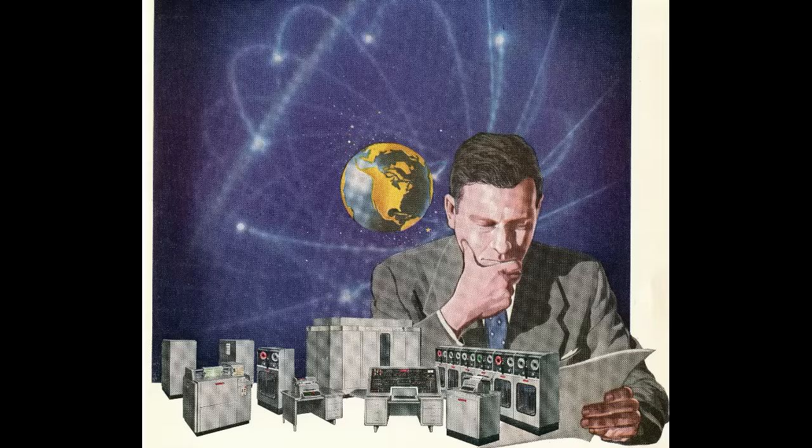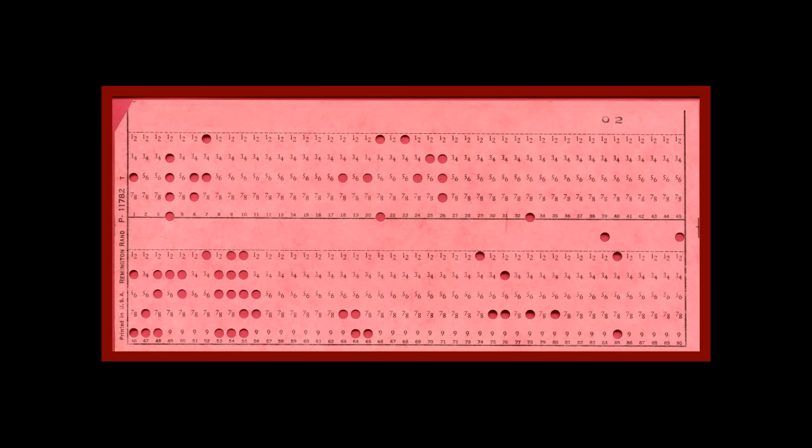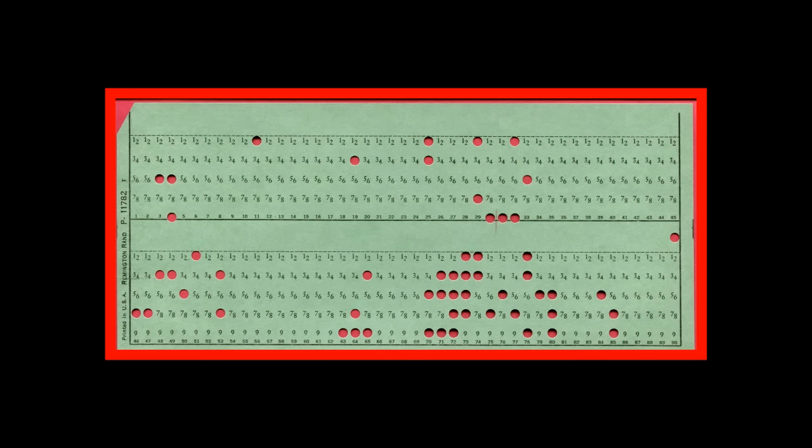UNIVAC also provided a card-to-tape converter machine, which could handle the input of 240 punched cards per minute. A single UNIVAC tape reel could store data from 20,000 punched cards.